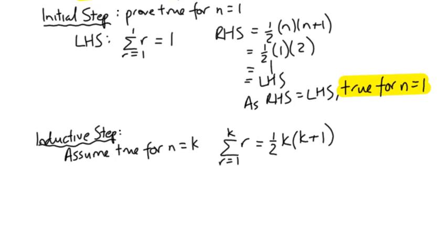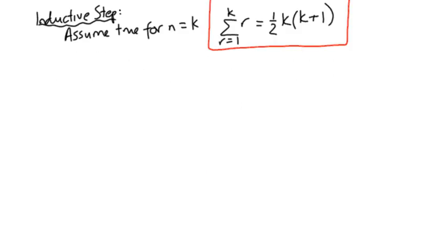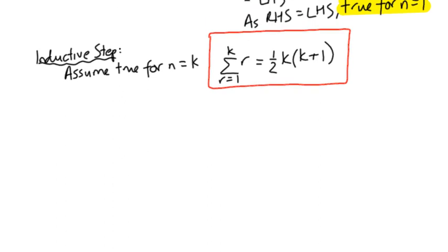Now, we're saying that's true. In other words, we are giving ourselves a formula with which we can use later on, because we're saying that we reckon it's true for n equals k. So assume true for n equals k.